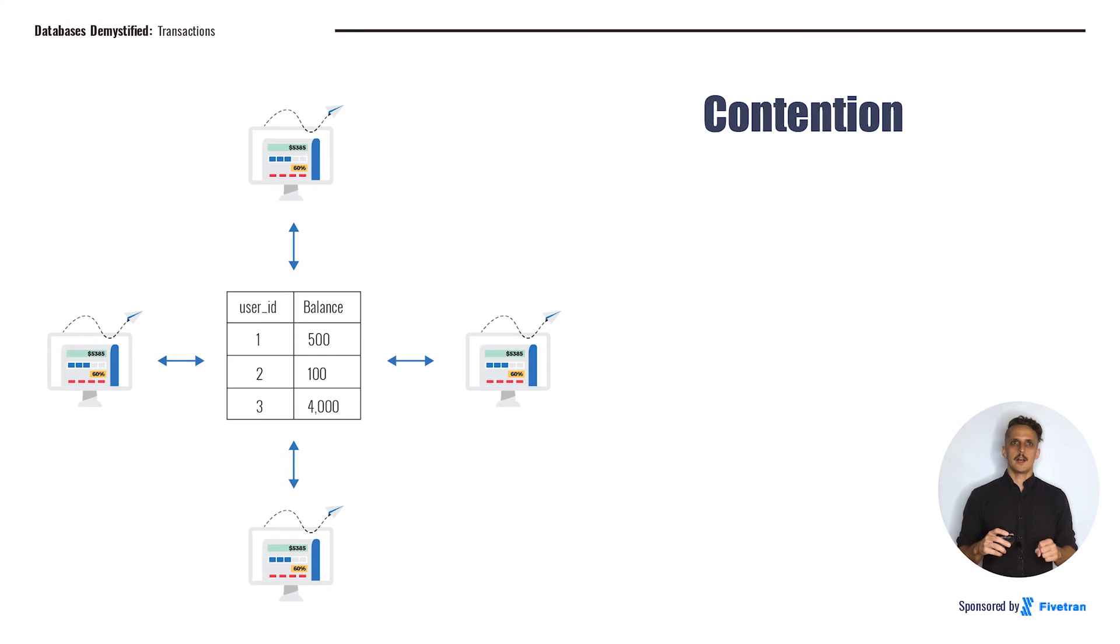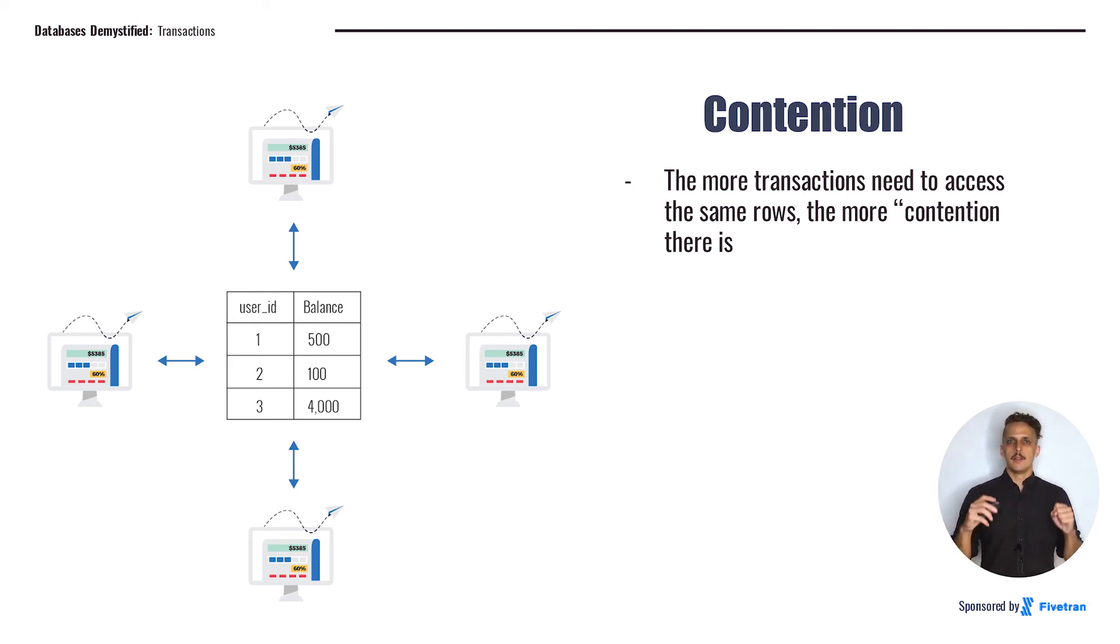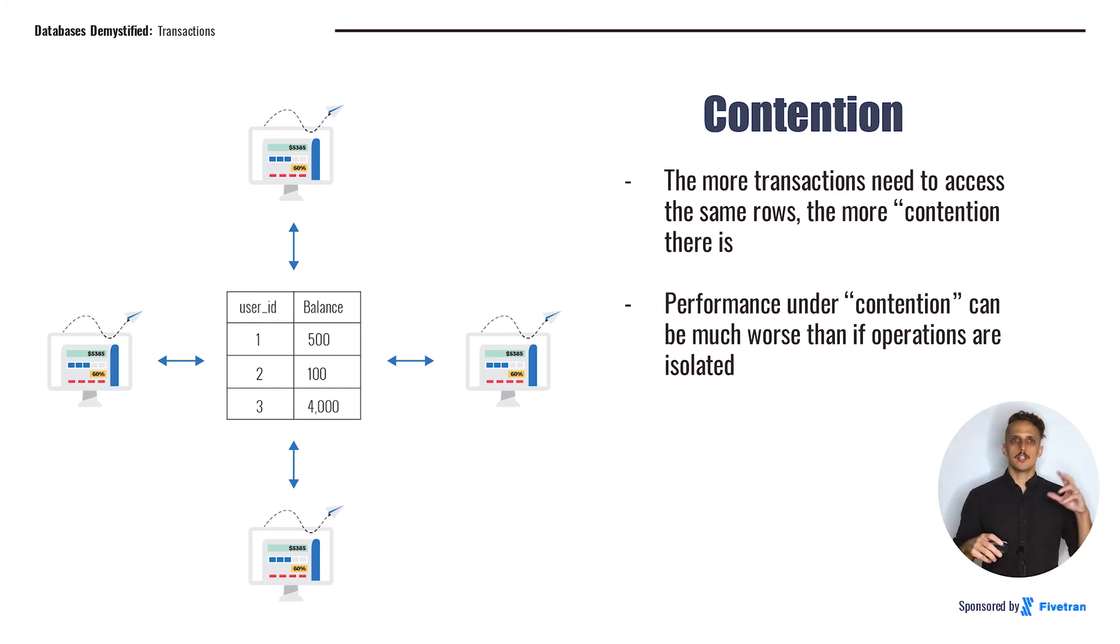Another key piece of vocabulary related to these concepts is the idea of contention. The more transactions there are that need to access the same rows, the more contention there is. So, under a production load where we have lots of users that are manipulating the data in the database, there will be more contention for those rows and those data than in a testing database that doesn't have any users. Performance under contention, your database speed under contention, can be much worse than when the operations are performed without any contention in a test database, without even taking into consideration the additional load on compute resources or memory.